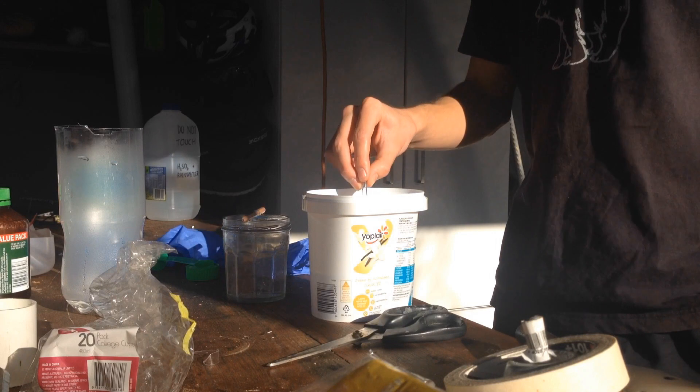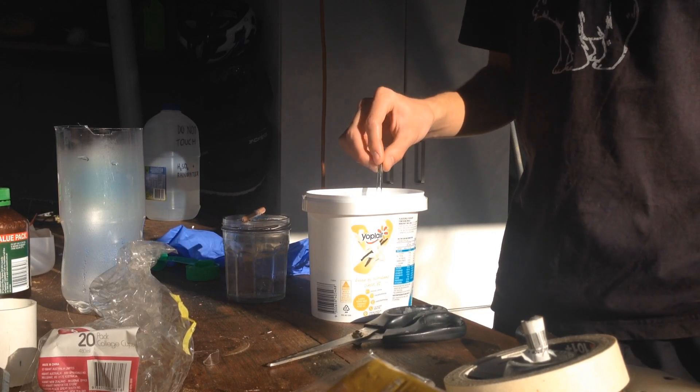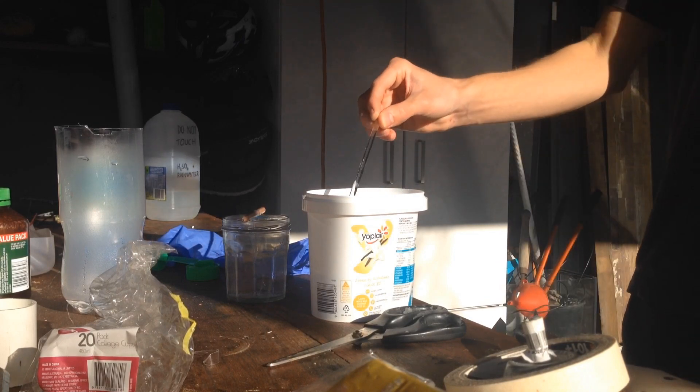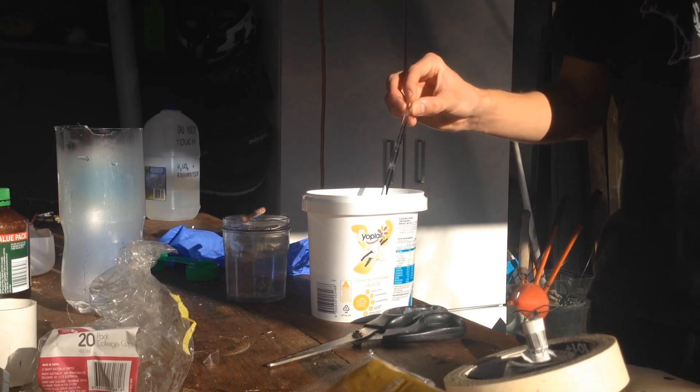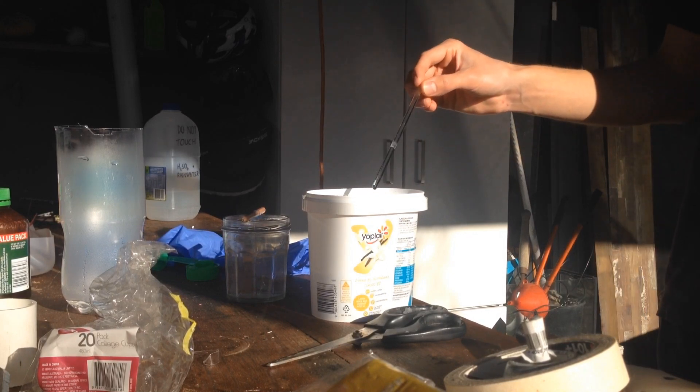Alright, once you've reached the point where no more will dissolve, so there'll be a little bit of copper sulfate powder in the bottom, just let it cool down, and then hopefully there'll be some small crystals of copper sulfate on the bottom that we can use as our seeds.